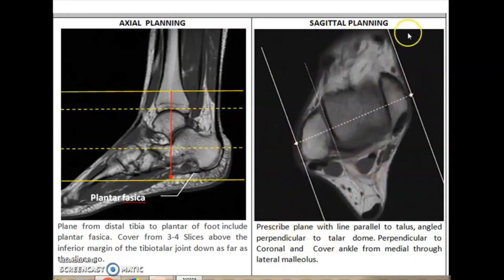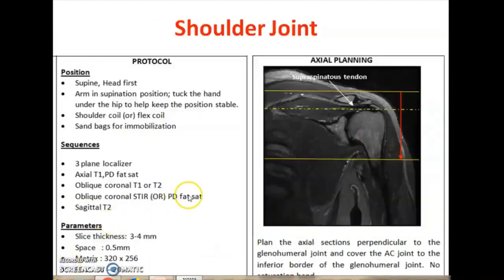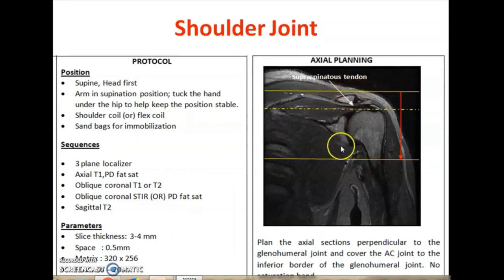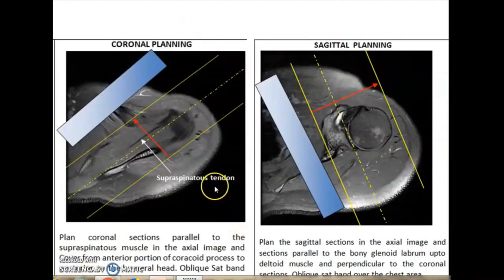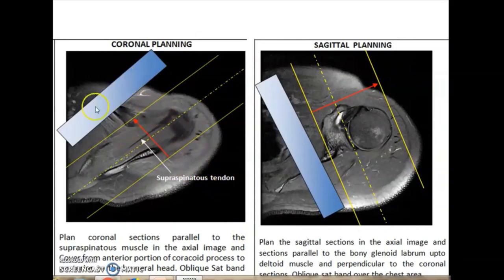The shoulder joint uses dedicated coils. Axial sections are planned in the coronal three-plane localizers, covering the AC joint and some extent from the glenohumeral joints. Coronal oblique planes are planned parallel to the supraspinatus tendon. Saturation bands have to be applied to avoid artifacts from breathing.